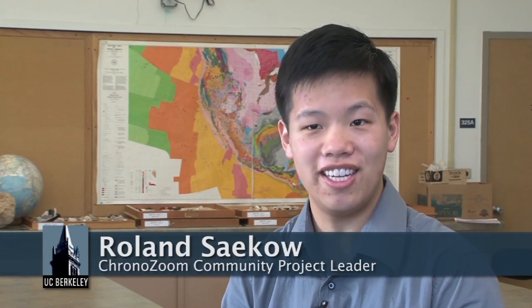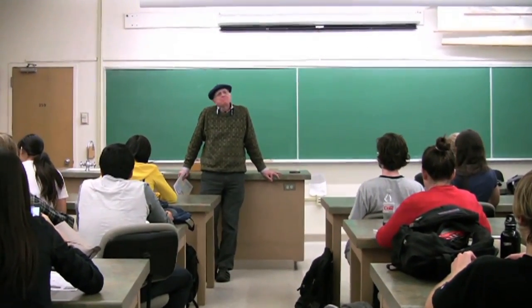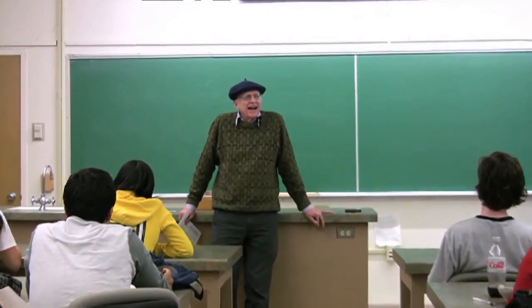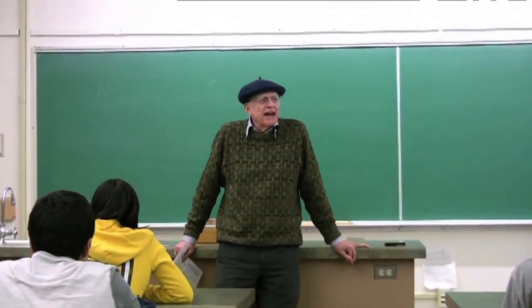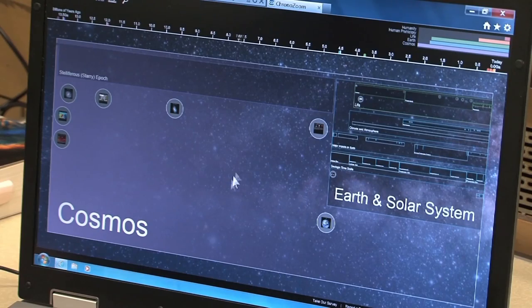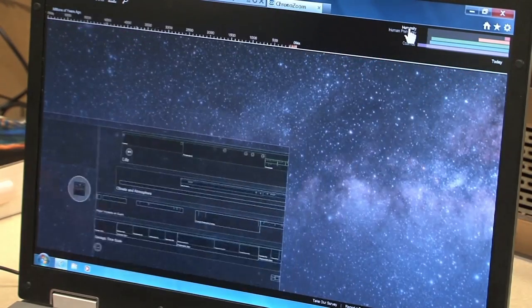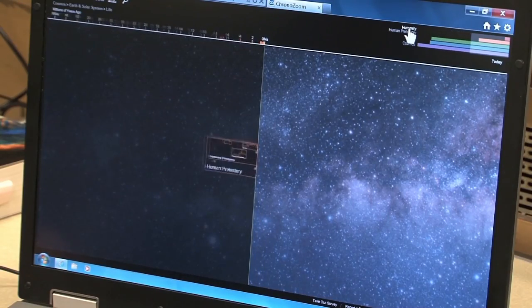Hi, my name is Roland Sekow. I got the idea to create ChronoZoom when I was a student in Walter Alvarez's big history class. For many students, and for myself actually, history wasn't my favorite subject. I think partly that's because we don't have a really clear way of seeing when those events and stories took place. So ChronoZoom is a way that you can visualize and put everything down in front of you — it's kind of like a map of time.